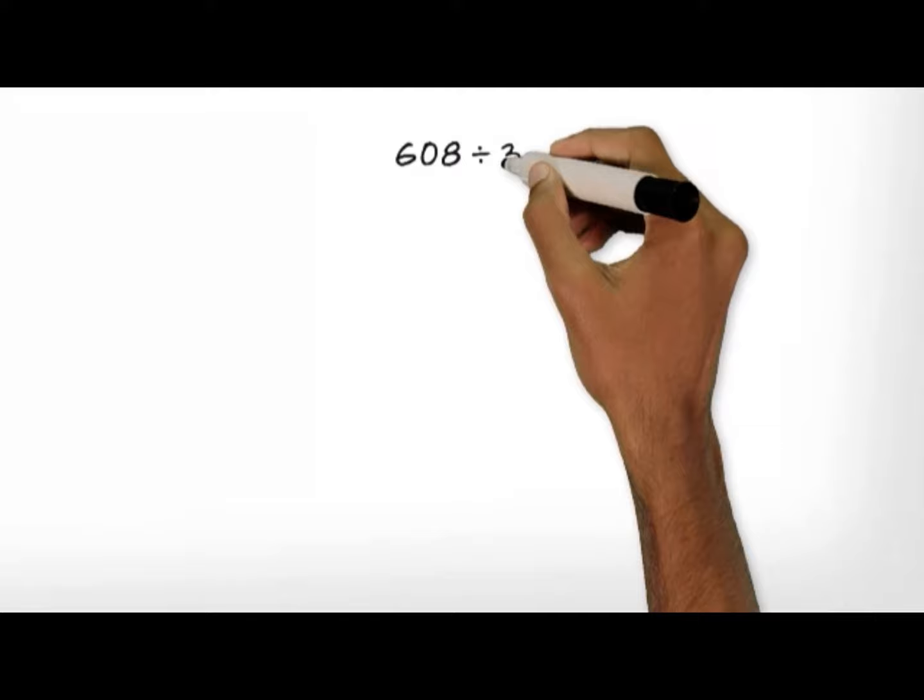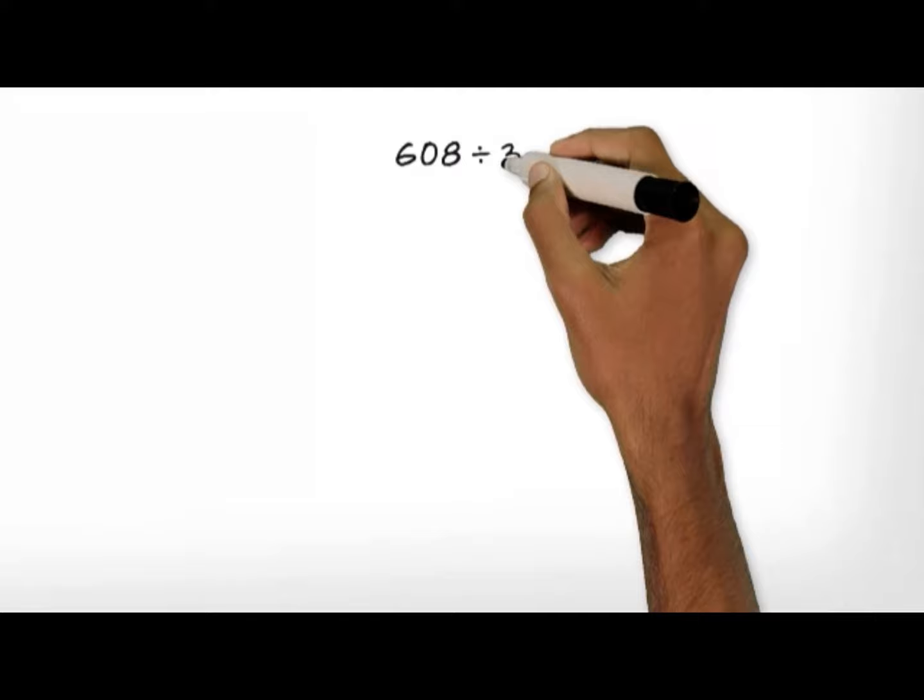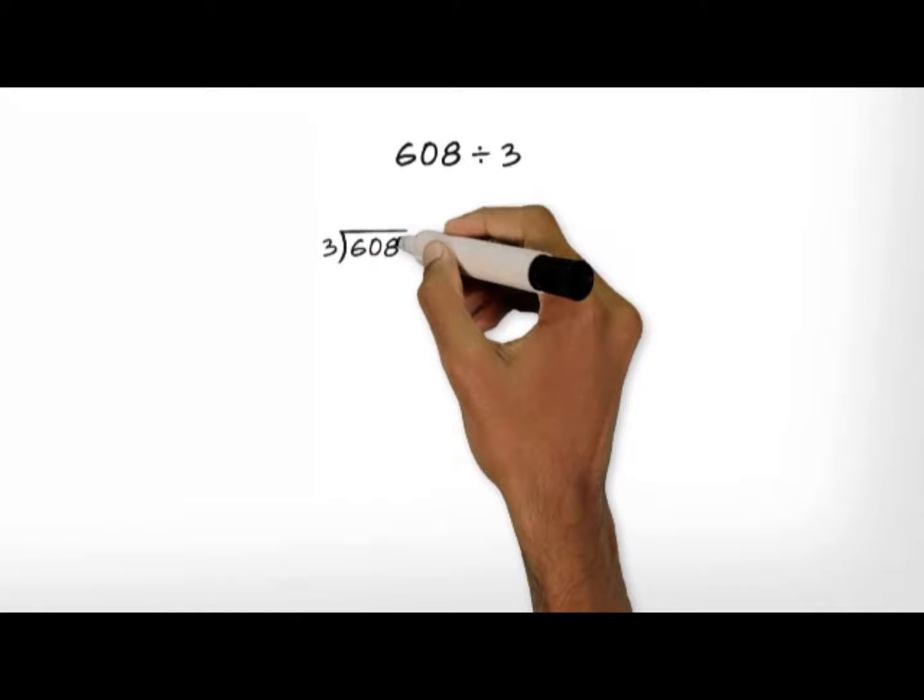To solve Tina's problem, we need to find 608 divided by 3. But we'll write the problem and record our thinking this way. The dividend is greater than 600, so we'll begin by taking out multiples of 100.